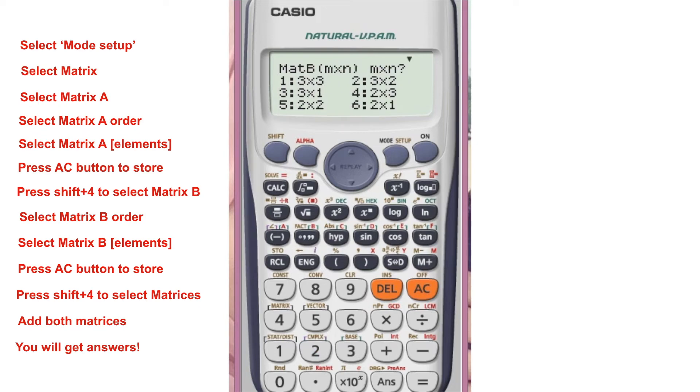We will select matrix B and load the elements. We will press the AC button. We will press SHIFT+4 to select matrix A and matrix B.